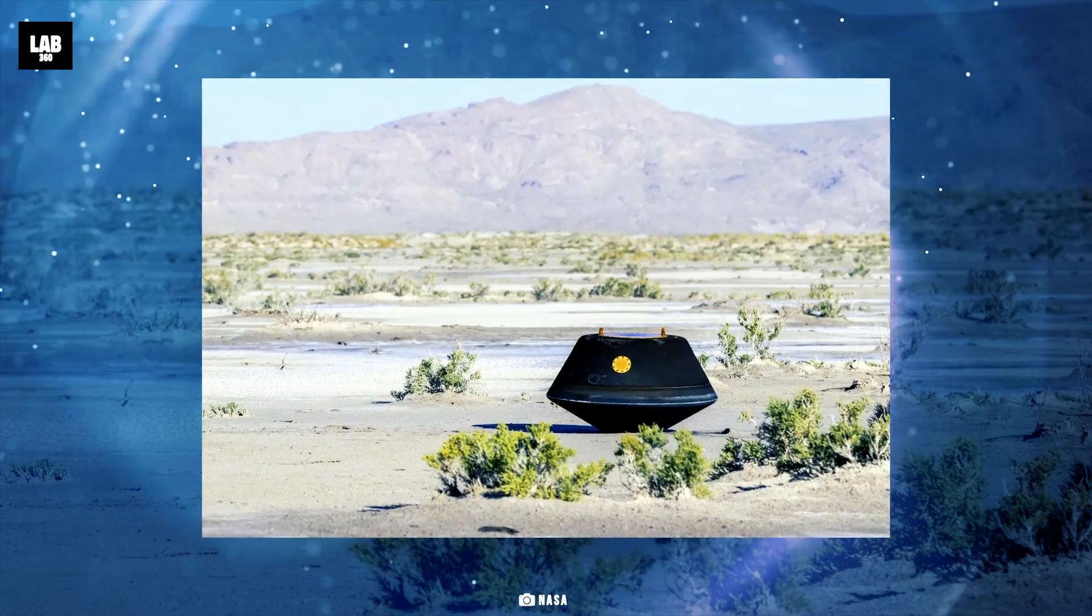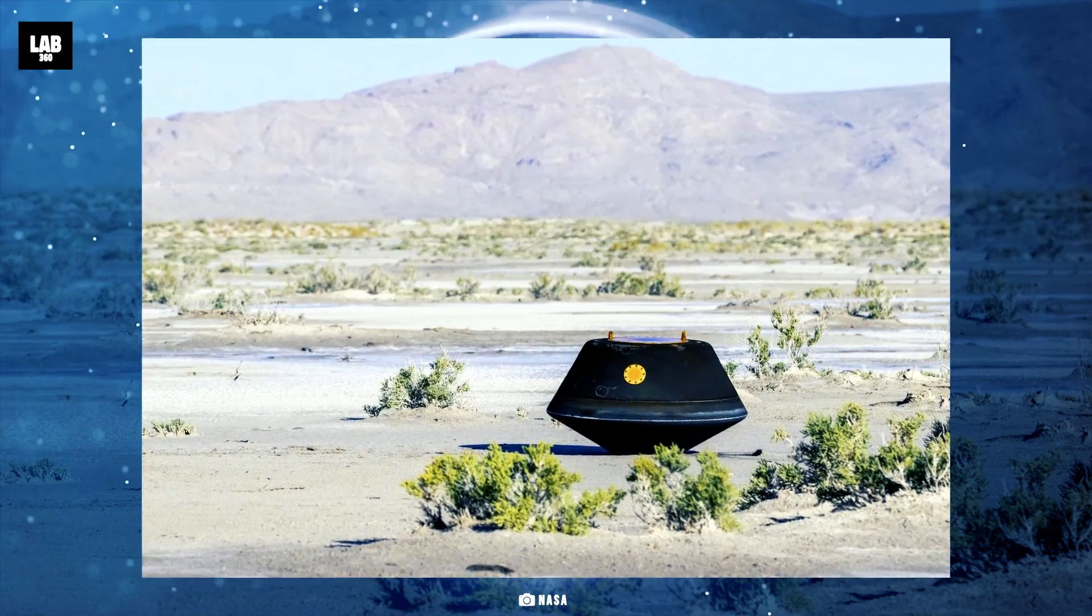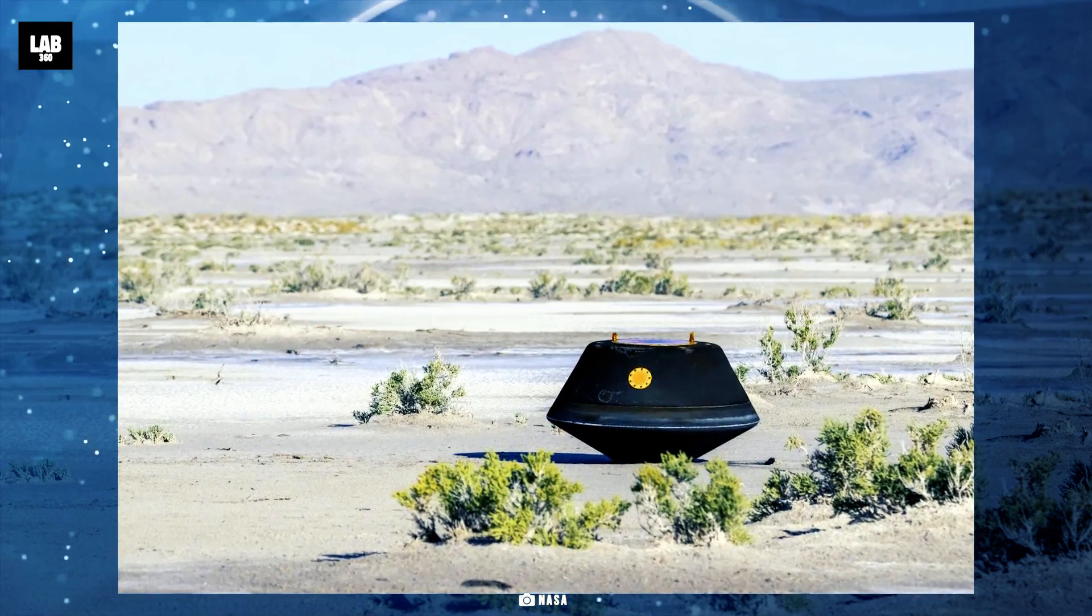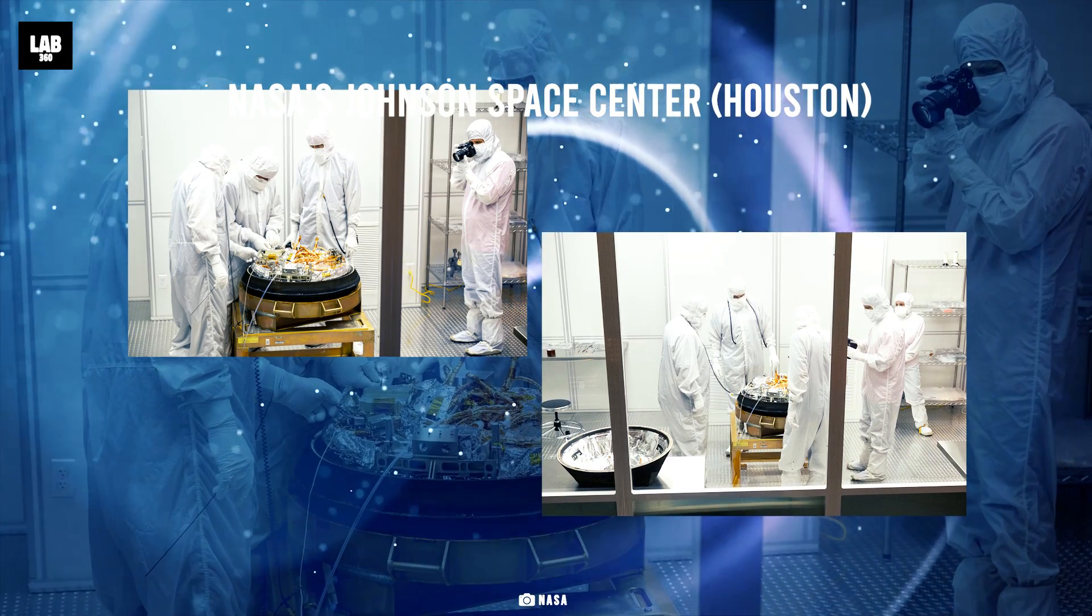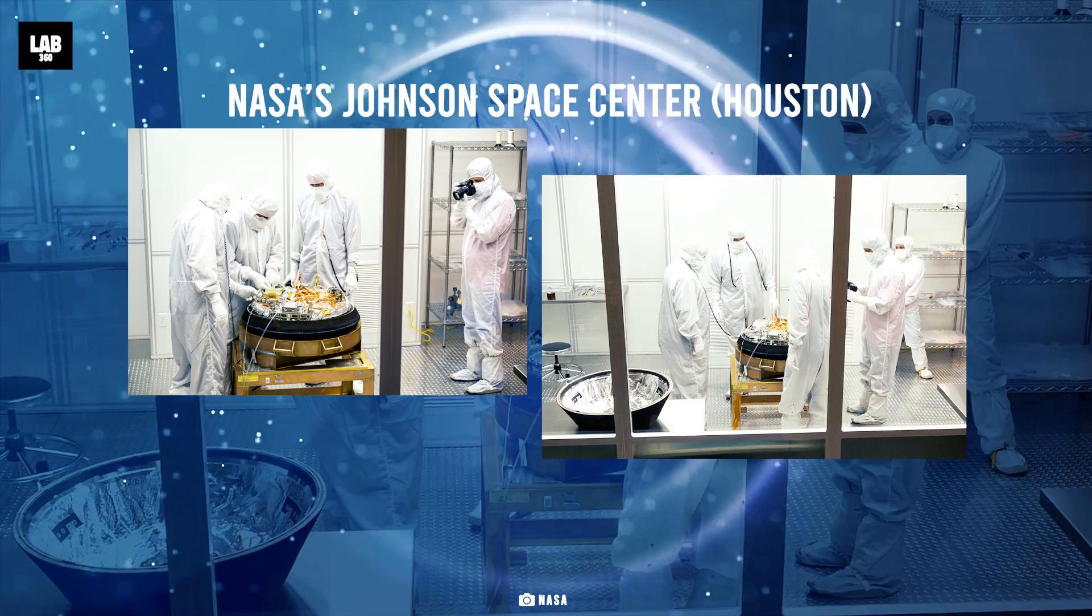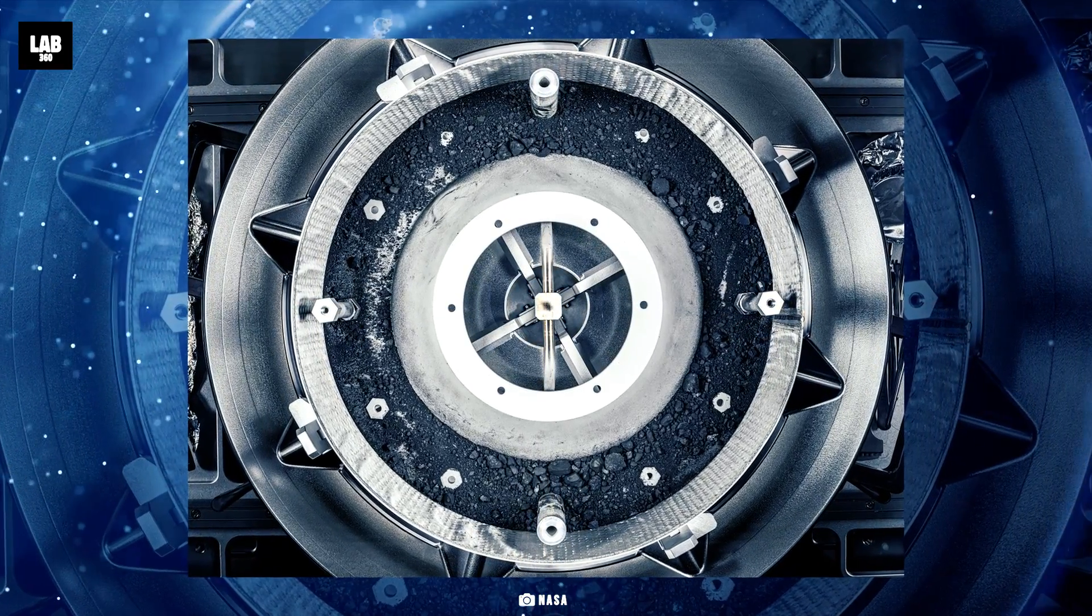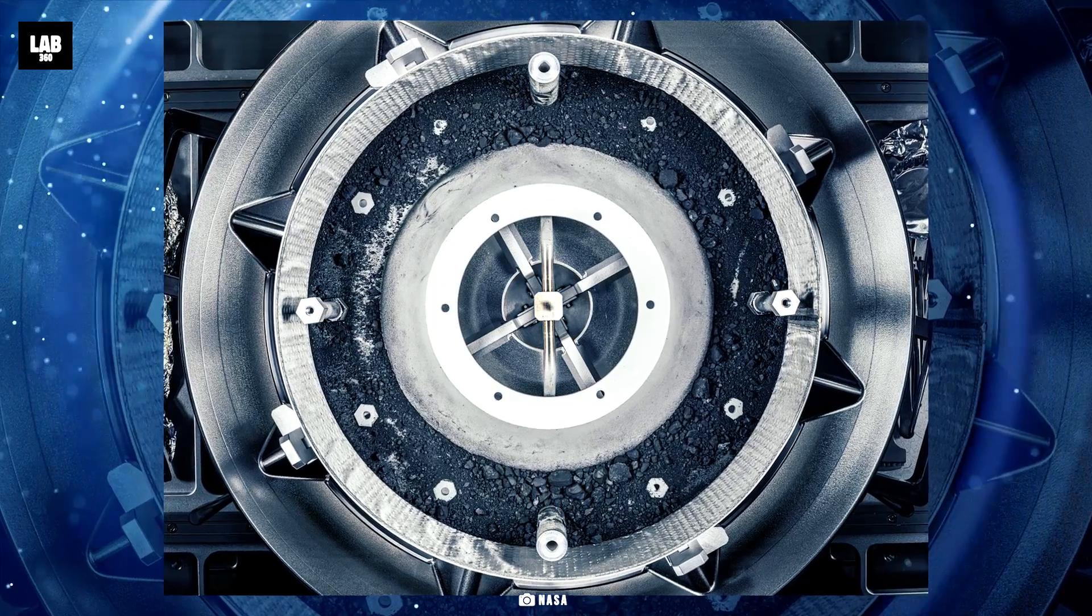The OSIRIS-REx dropped off the sample into the Utah desert in September 2023, but didn't land. The Astromaterials Curation Team at NASA's Johnson Space Center in Houston collected 2.48 ounces of asteroid material from the sample hardware even before removing the lid. The team then removed two stubborn fasteners.